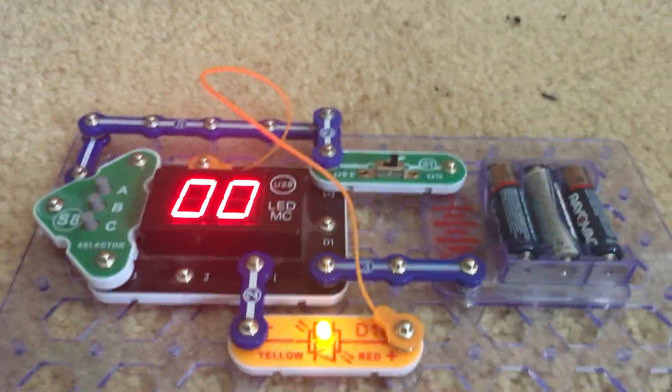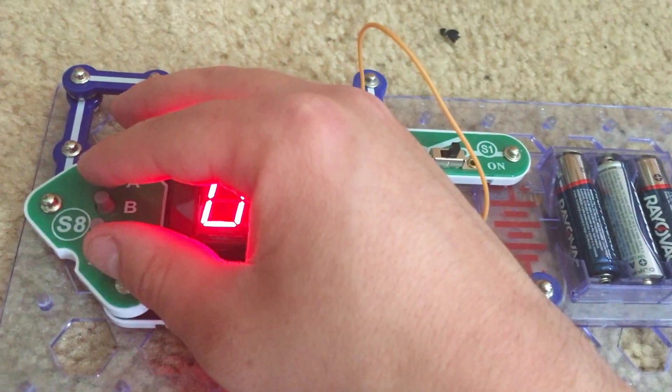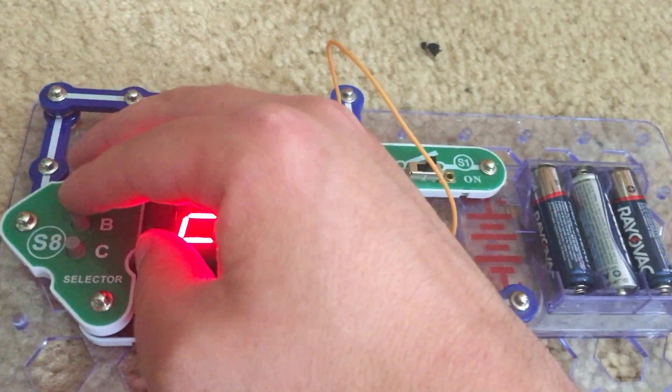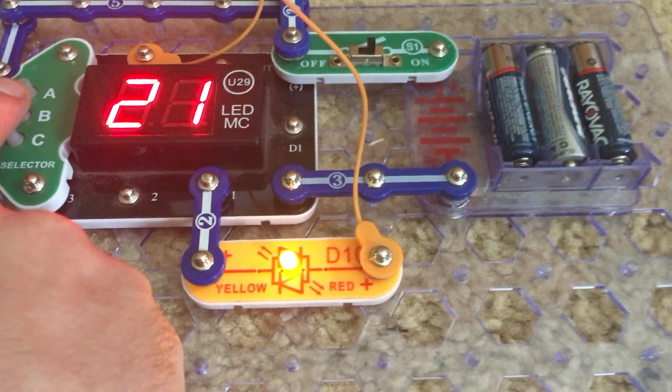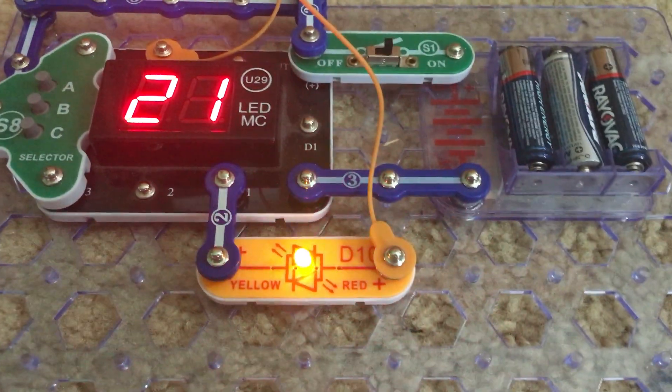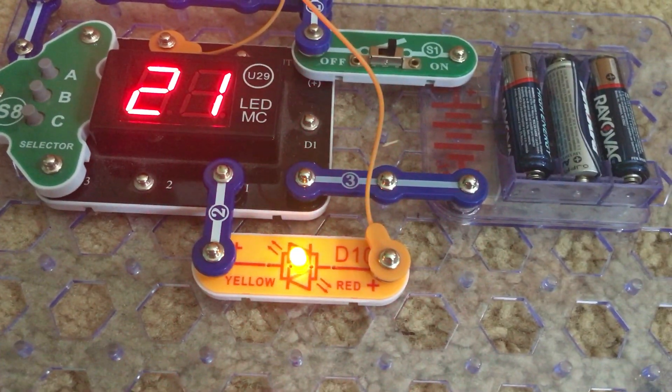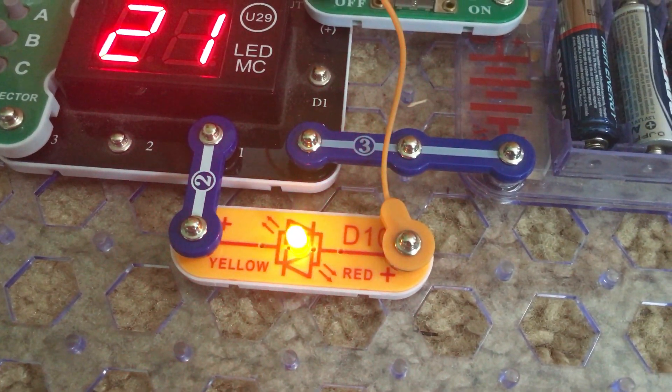Project 48 is bicolor light. For this project we will select game 21 and watch what happens to the bicolor LED. It changes from yellow to red. But what's interesting is that it never completely shuts off.